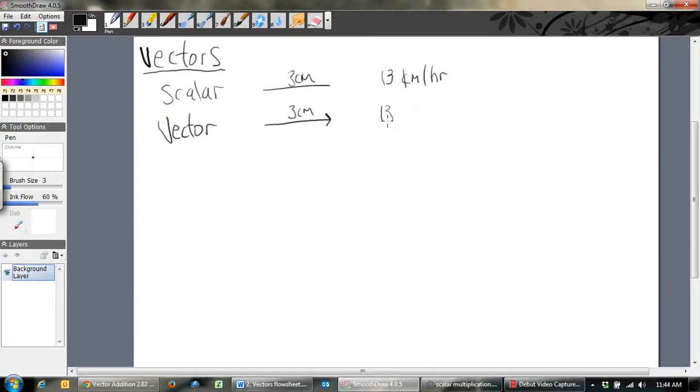And so a vector, in this case, might be 13 kilometers per hour, kilometers per hour maybe east. You're driving, not only are you doing a magnitude of 13 kilometers per hour, but it's also got a direction, you're traveling in an east direction. So basically that's the difference between scalars and vectors.